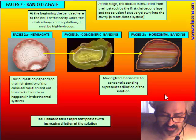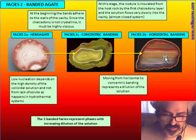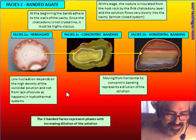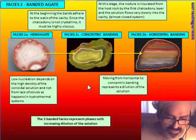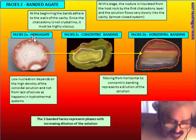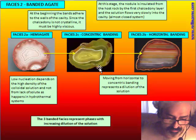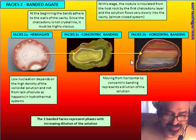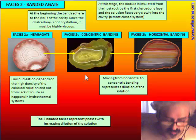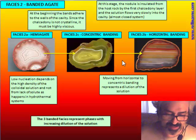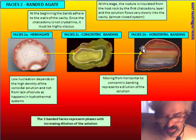When banding starts to form, the nodule is already insulated from the host rock by the first chalcedony layer, so solution flows inside very slowly through the porosity of that layer — making it almost a closed system. The three structures are a representation of the same process with progressively more diluted solution. There is no real mineralogical change, just the same phenomenon with more and more water.